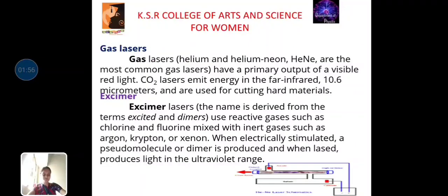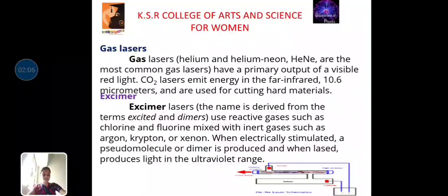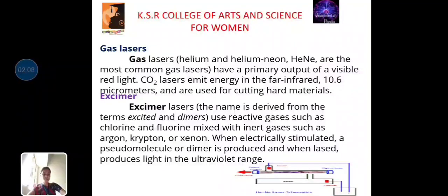Next, one is the gas laser. Gas lasers, an example: Helium and helium neon are the most common gas lasers, have a primary output of a visible red light. CO2 lasers emit energy in the far infrared 10.6 micrometers and are used for cutting hard materials.